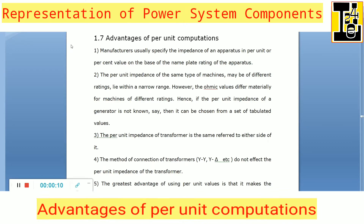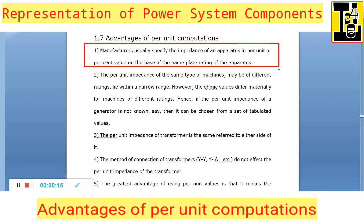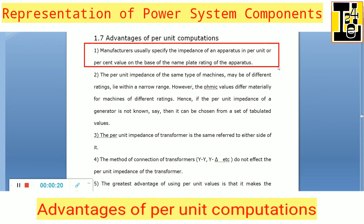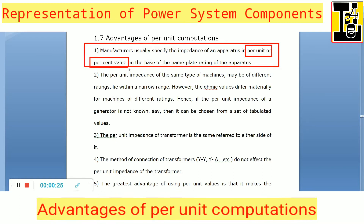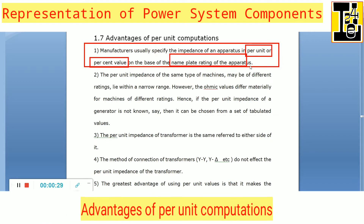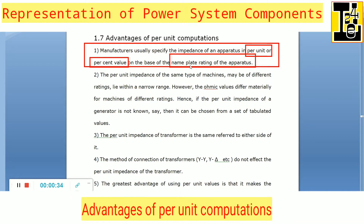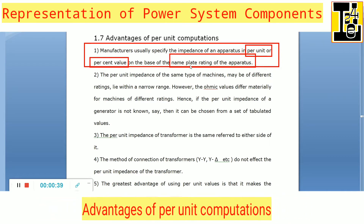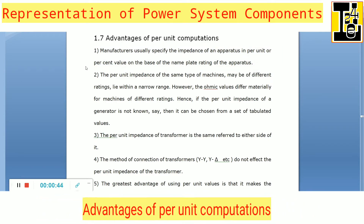The first advantage is that manufacturers usually specify the impedance of an apparatus in per unit or percentage value on the base of the nameplate rating of the apparatus. So based on the nameplate rating, the impedance or reactance of an apparatus in per unit or percentage value is mentioned.